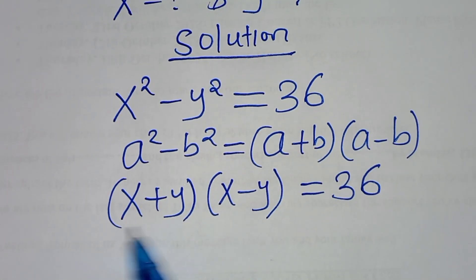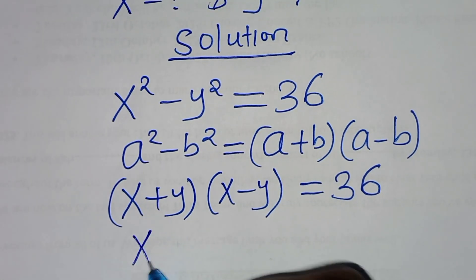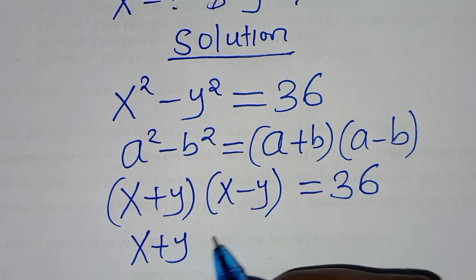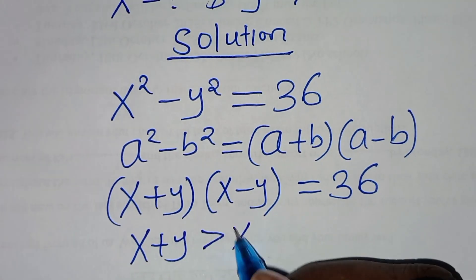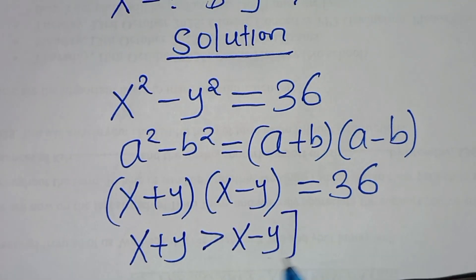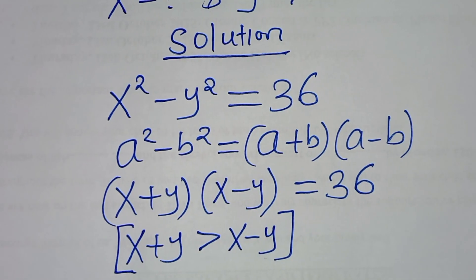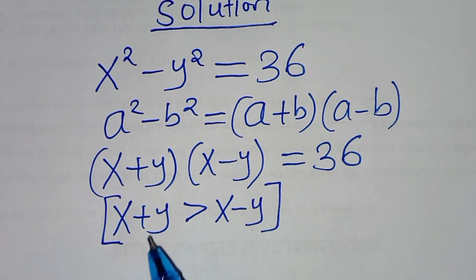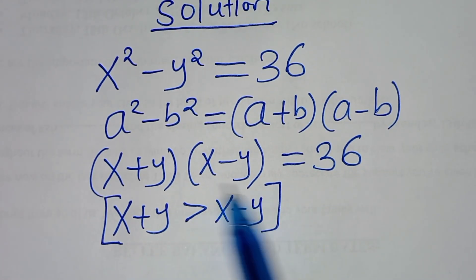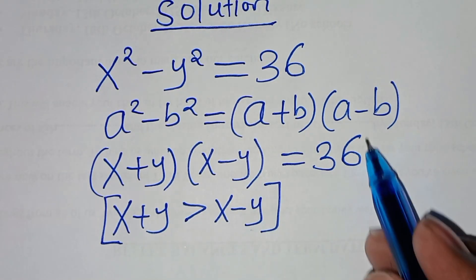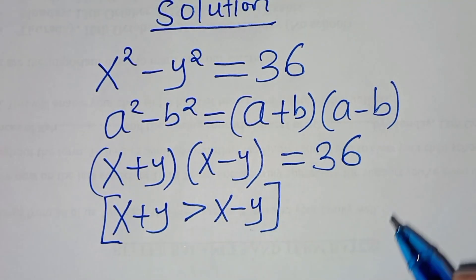From here we have that x plus y is greater than x minus y. Now this implies that from this part here, let's determine the factor pairs of 36.